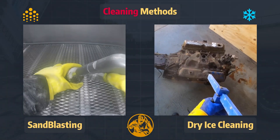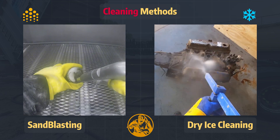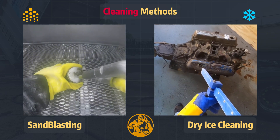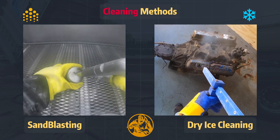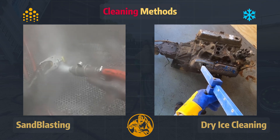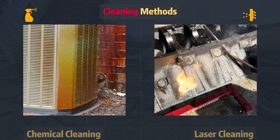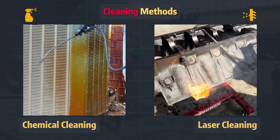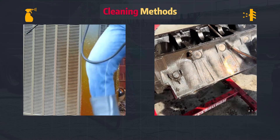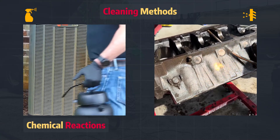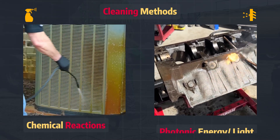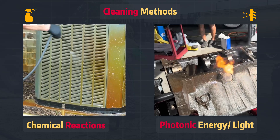Sandblasting and dry ice cleaning are considered physically abrasive — they use kinetic energy to blast media onto the surfaces. Chemical and laser cleaning, on the other hand, are not physically abrasive. Chemical cleaning relies on chemical reactions, while laser cleaning uses photonic energy, or light.